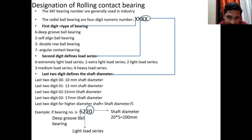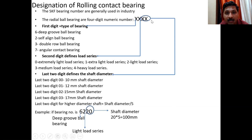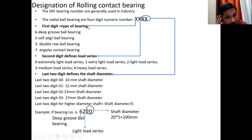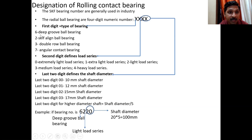Each digit of the 4-digit number defines something. If we consider a 4-digit number, the first digit defines the type of the bearing. If the first digit of the bearing number is 6, it is a deep groove ball bearing.